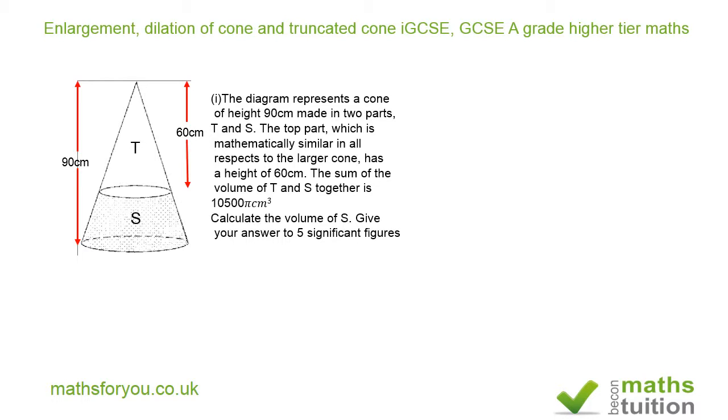The top part, cone T, is mathematically similar in all respects to the larger cone and has a height of 60 centimeters. The sum of the volumes of T and S together is 10,500π cubic centimeters. Calculate the volume of S. Give your answer to five significant figures.